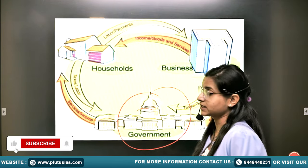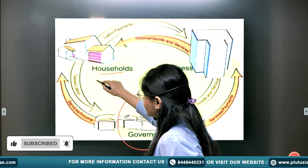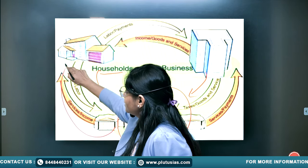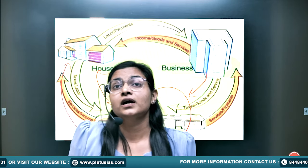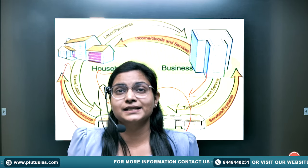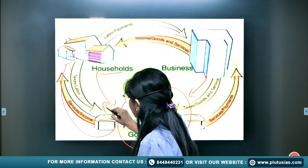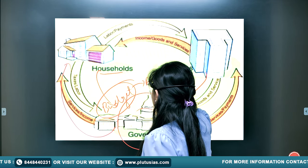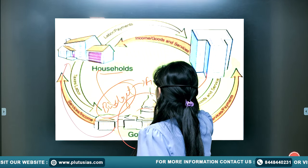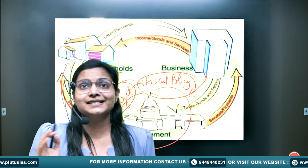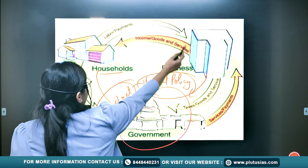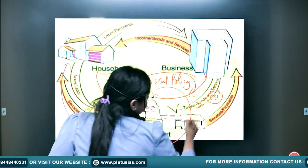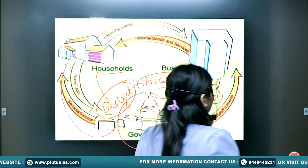Now we will include the government into this. Households pay taxes to the government and businesses also pay taxes to the government. In return, the government provides different services like road services and also provides subsidies. For this, the government makes a budget. That's why you read about the budget and here comes the fiscal policy — where the government makes the arrangement for taxes and subsidies. You have heard about GST; that's why questions can be asked on GST or income tax.